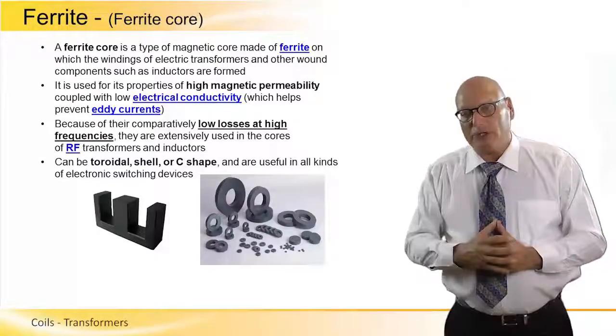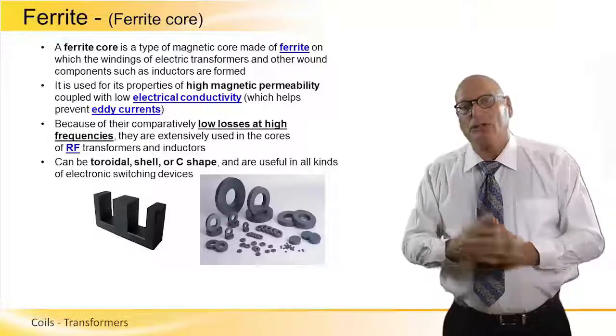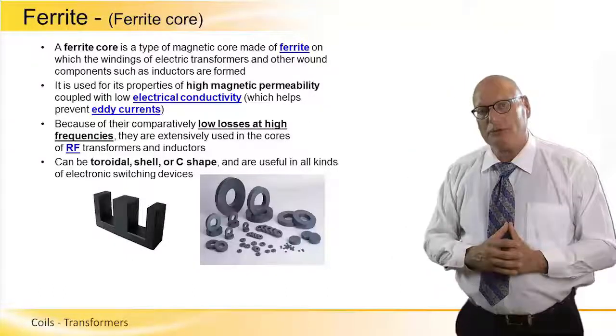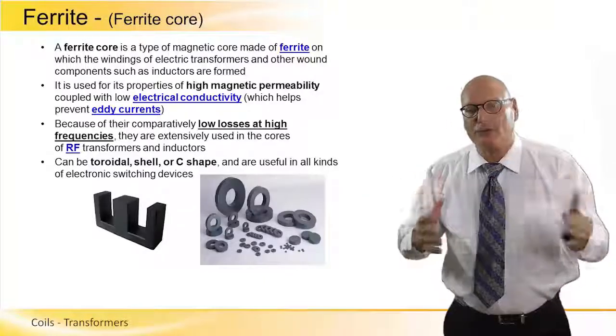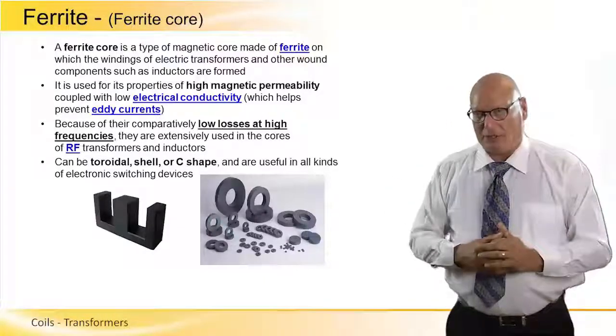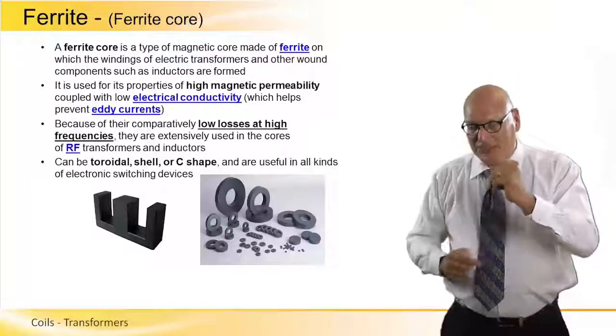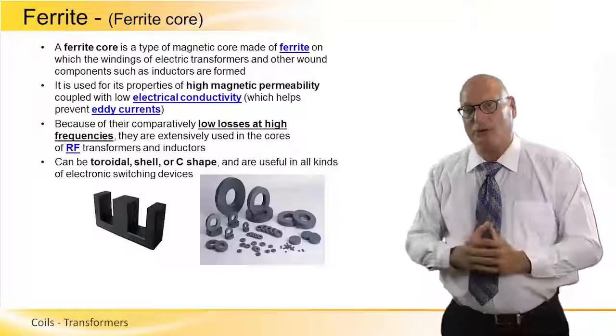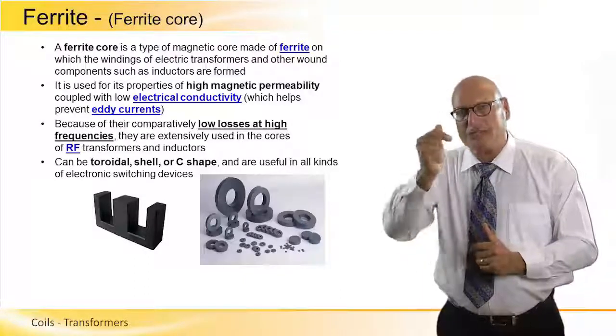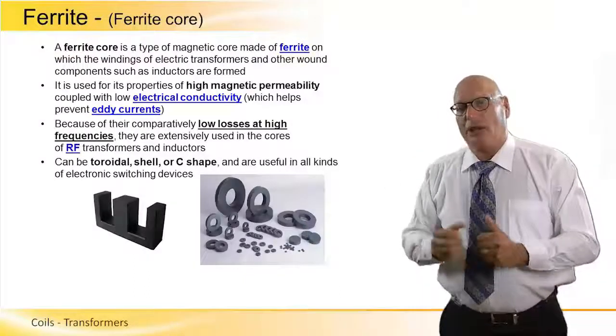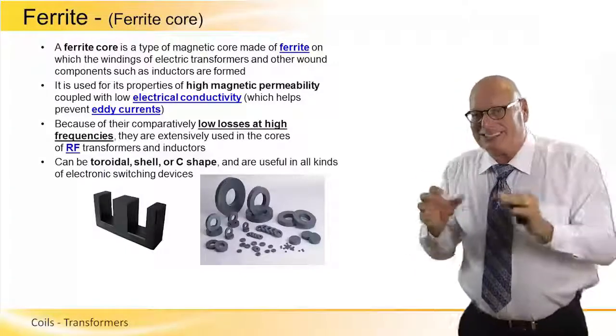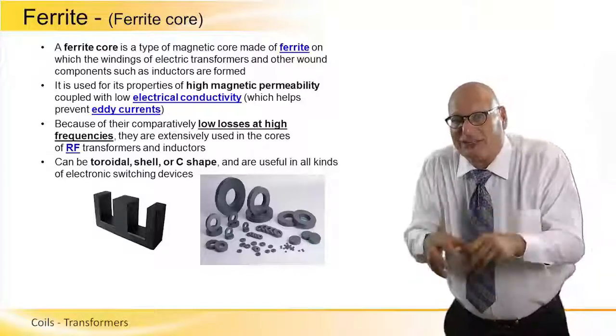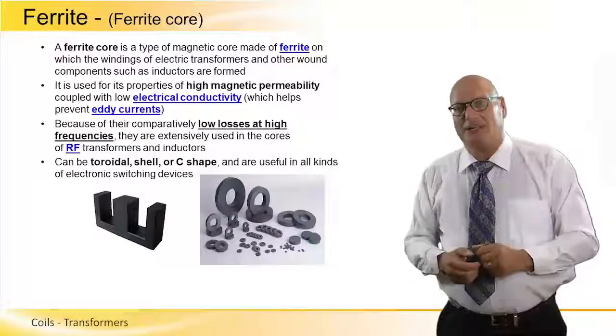The shape can be toroidal, shell or C or E shape as we see in the picture, and are useful in all kinds of electronic switching device. Why switching? Because there's a transient between state number one and state number two, very quick transient in switch. Ferrite will disable the development of parasitic currents within the material in this high transient time.